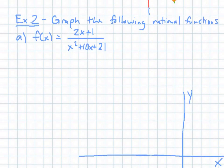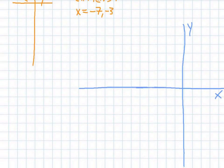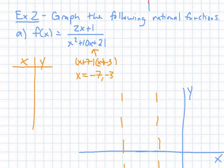Example 2: the function is (2x+1) / (x²+10x+21). I'll make a table to graph it. First, I identify my asymptotes. Factoring the denominator gives (x+7)(x+3), so setting those equal to zero gives vertical asymptotes at x = -7 and x = -3. For the horizontal asymptote, the degree on the top is smaller than the degree on the bottom, so the horizontal asymptote must be y = 0.